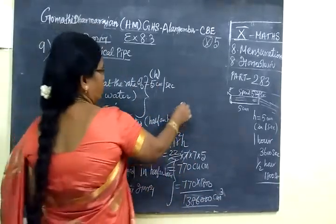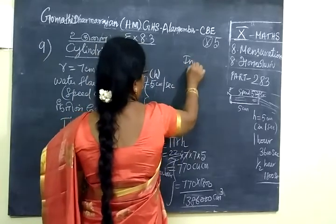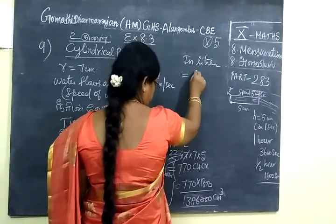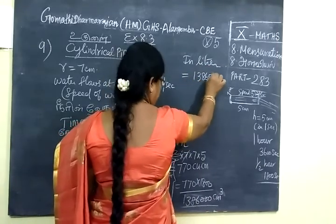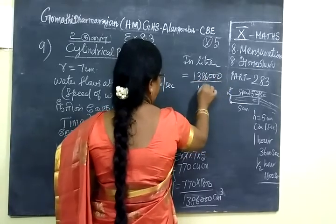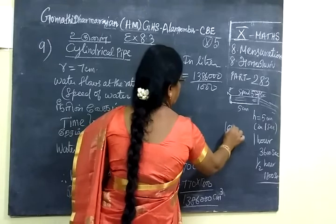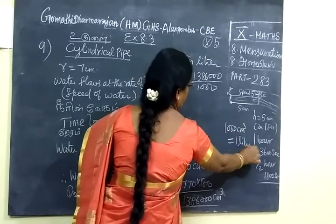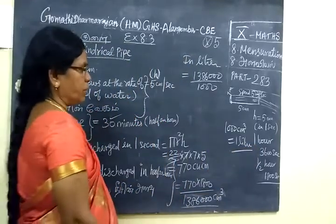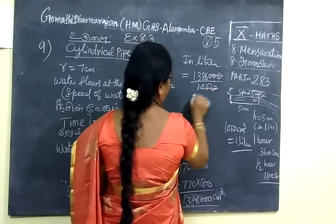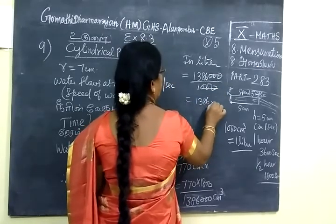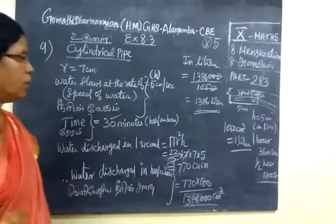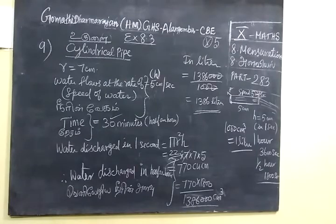Therefore, water discharged in half hour in liters - it is equal to 1386.30 by 1000. Because 1000 centimeter cube equals 1 liter. So this is the answer - 1386 liters.